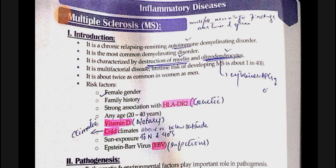Multiple sclerosis is the most common demyelinating disorder. There is destruction of myelin and oligodendrocytes, resulting in multiple neurological findings over time and space. It is a multifactorial disease, more common in women. Family history can be positive, and genetics play a significant role — HLA-DR2 is positive. It is more common in cold climates, and can be triggered by sun exposure, Epstein-Barr virus, infections, and genetics combined.